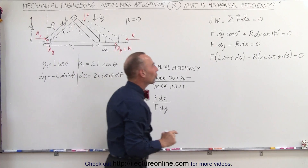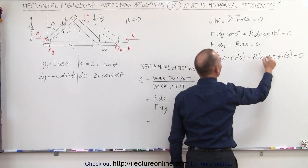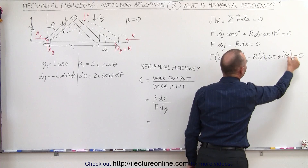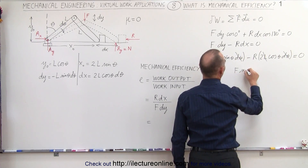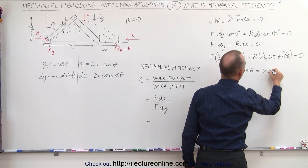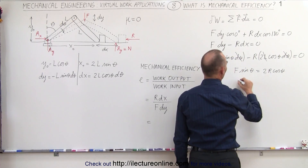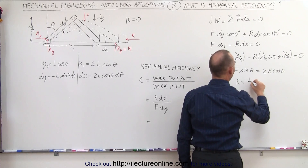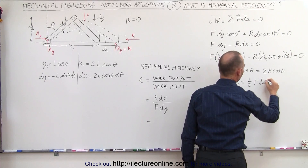We can factor out l and divide both sides by l and by d theta, so the equation becomes f times sine of theta equals 2r times cosine of theta. Therefore r is equal to one half f times sine divided by cosine, which is the tangent of theta.